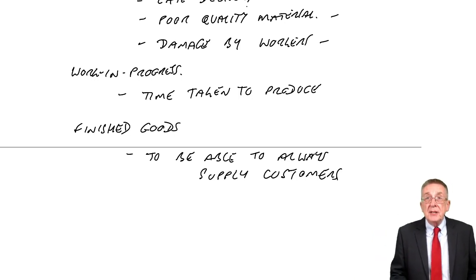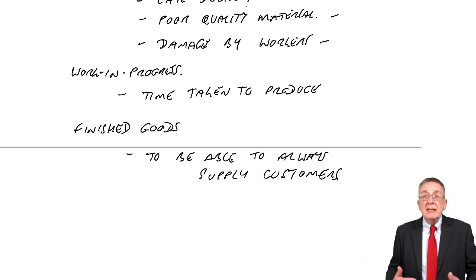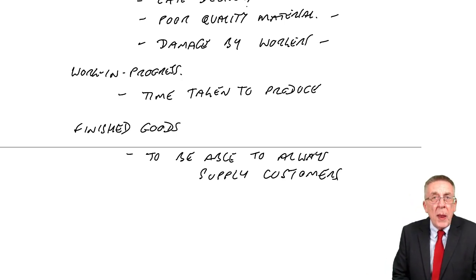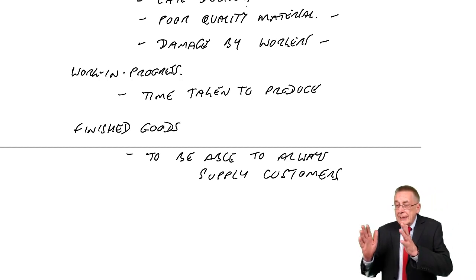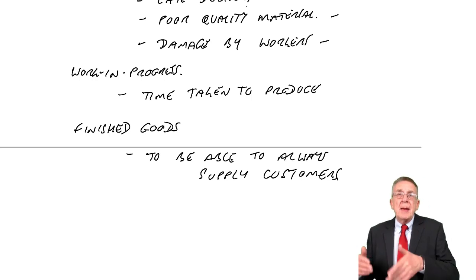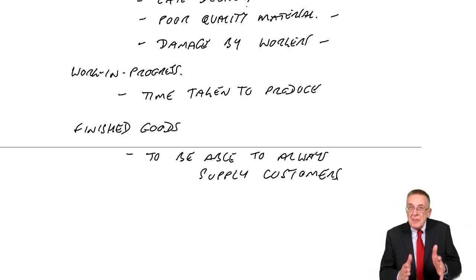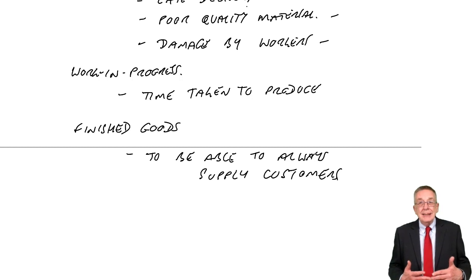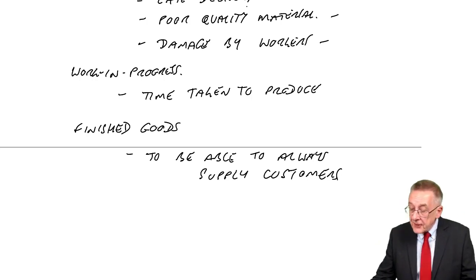Dell doesn't want big inventories of computers anyway, because if you haven't sold it within a few months, new models come out and the old model won't sell. Not everyone can do that — car companies, for instance, can't build a car overnight. But whereas they used to keep big inventories of red cars, blue cars, different colours, now they don't. They keep inventories of unpainted cars, because if you want a red or blue car, they can paint it very quickly. They can't get inventories down to zero, but they can have much lower inventories. And that's how just-in-time is achieved.